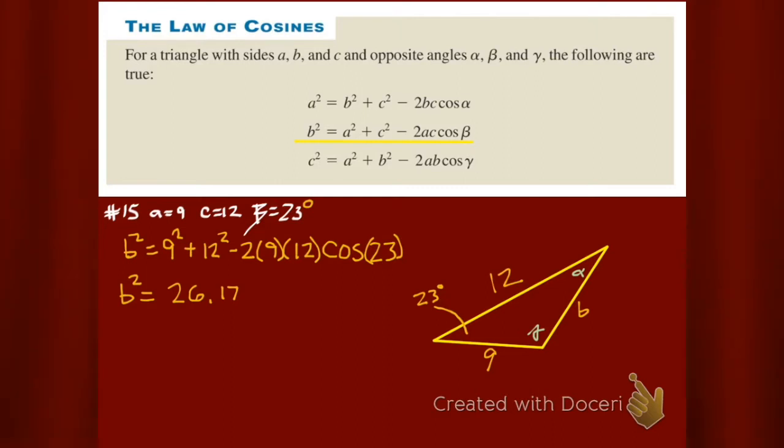And our B squared, oh B squared, is 26.17. And then I root it because I want to get to the root of this. And B turns out to be 5.12. Let's just call it 5.1. Rounded.